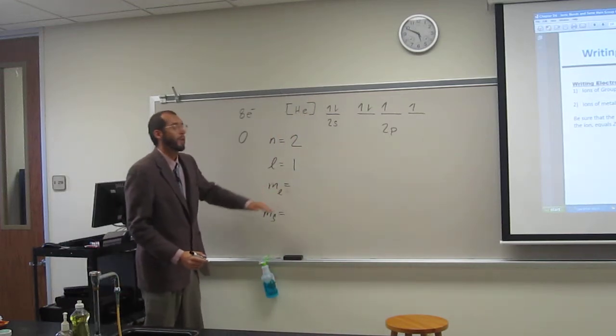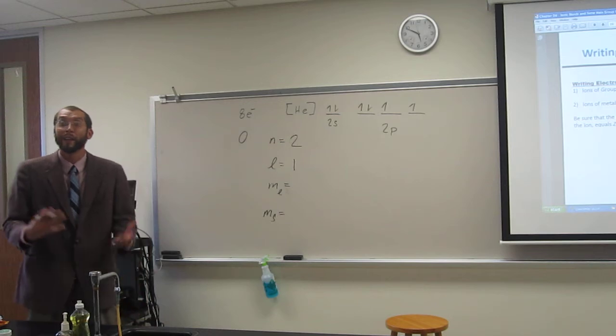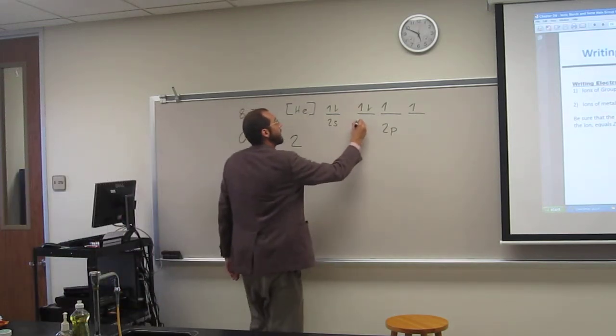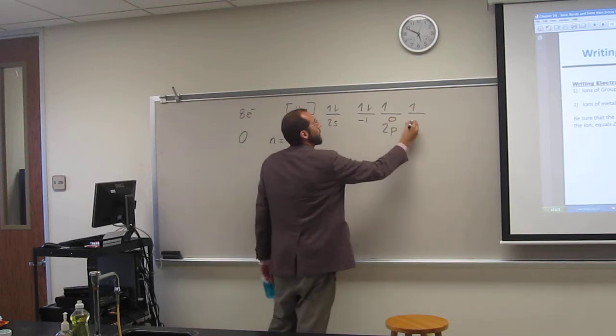So what's m sub l? Negative 1. Negative 1. How did I figure that out? It's the first one. It's negative 1, 0, 1. This one's negative 1, 0, and 1.